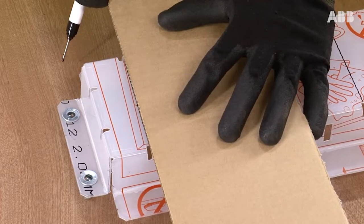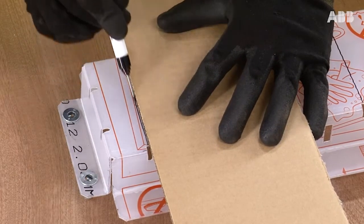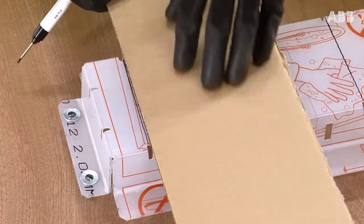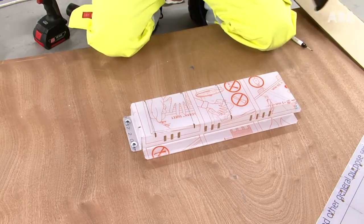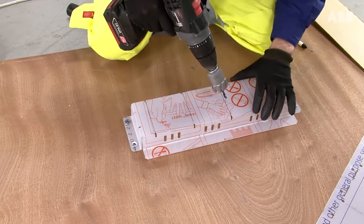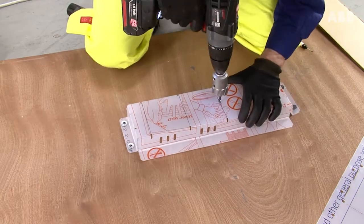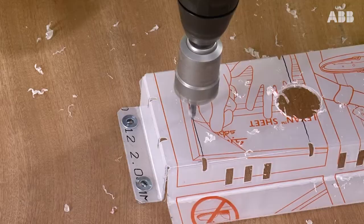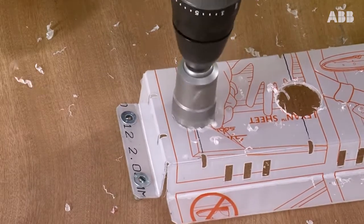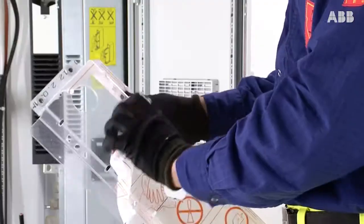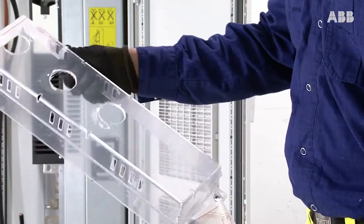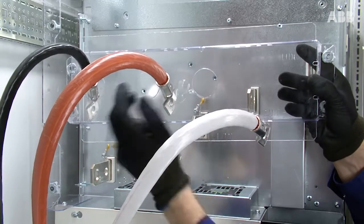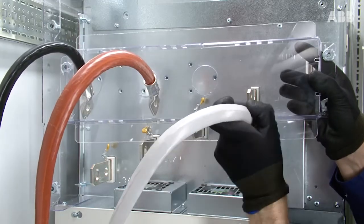The next step is to prepare the plastic shrouds for the input power cables. Drill sufficiently big holes. Feed the input cables through the drilled holes of the plastic shrouds.